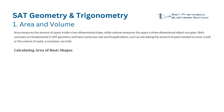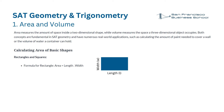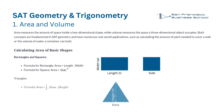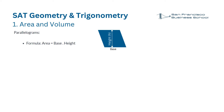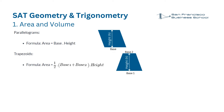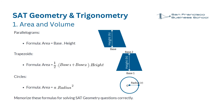Calculating area of basic shapes. Rectangles and squares: Area equals length times width; for square, area equals side squared. Triangles: Area equals 1/2 times base times height. Parallelograms: Area equals base times height. Trapezoids: Area equals 1/2 times (base 1 plus base 2) times height.